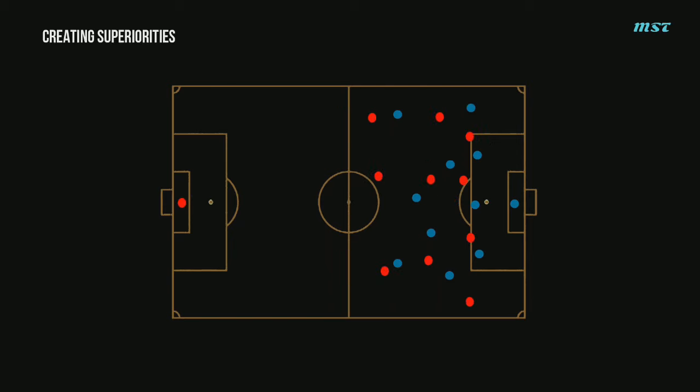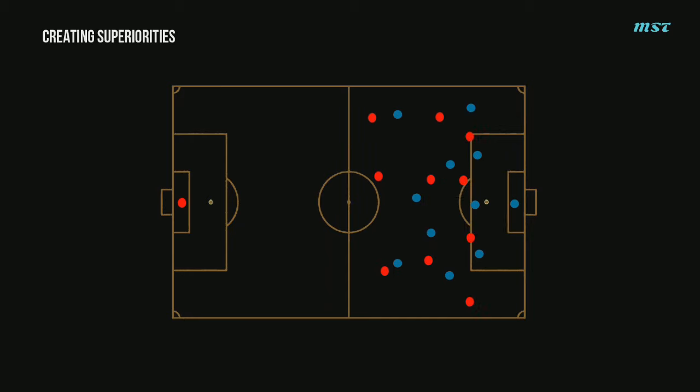Positional superiority, on the other hand, means occupying more threatening spaces of the pitch while trying to create chances and score goals. Often numerical and positional superiority are used together to carry out effective build-up: switching play, overlapping and underlapping runs — the fullbacks' third-man runs are some of the ways which teams create superiority during the build-up.